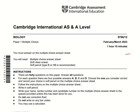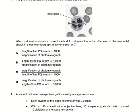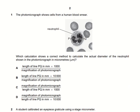Assalamu alaikum. In this lecture we will solve the past paper of A-Level Biology 9700, the paper which appeared in March 2023. The photomicrograph shows a cell from a human blood smear, and we are shown a length in the photomicrograph. We need to find which calculation shows the correct method to calculate the actual diameter of the neutrophil shown, in micrometers.